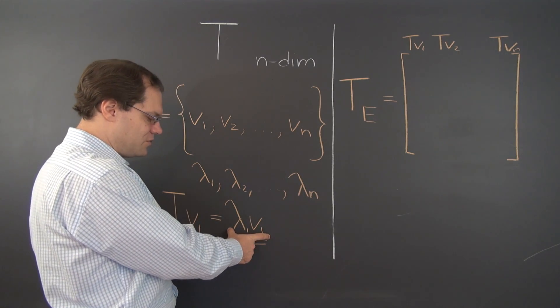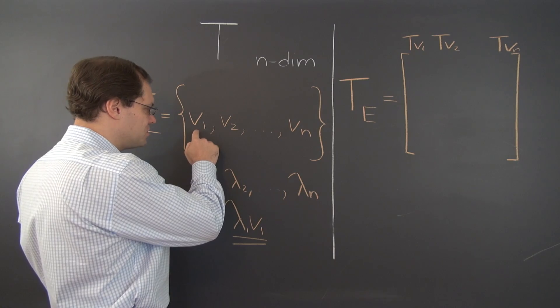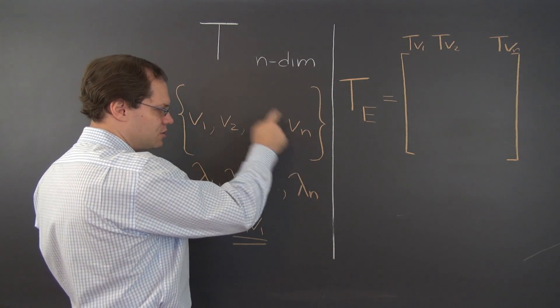So if you have a vector that's lambda V1, and you have to decompose it with respect to V1, V2, and so forth up to Vn,